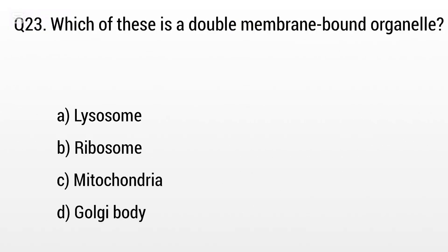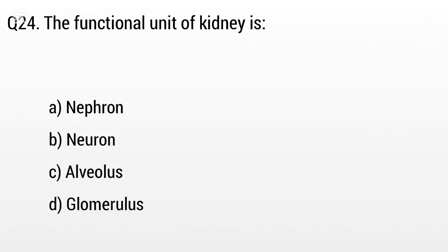Question 23. Which of these is a double membrane-bounded organelle? Option A: Lysosome, B: Ribosome, C: Mitochondria, D: Golgi apparatus. The right answer is option C, Mitochondria.